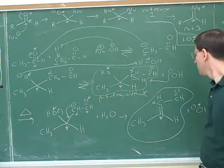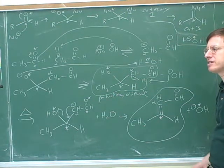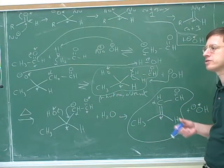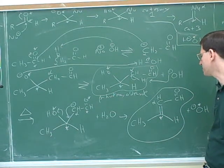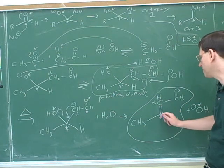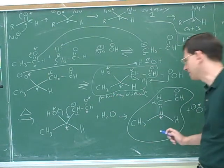We need a name for this product here. Well, notice that here we have a double bond. I think we've seen in the past that double bonds are considered a source of unsaturation. So this would be considered an unsaturated part of the molecule. Well, where is the unsaturation? Between the alpha carbon and this is the beta carbon. So this is what's called an alpha-beta unsaturated aldehyde.